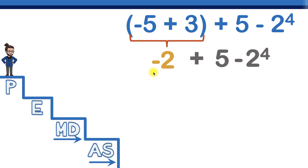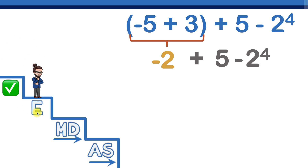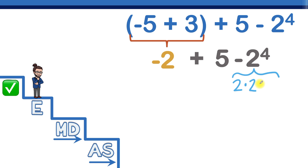Now we're at the expression negative two plus five minus two to the fourth. Do you see any more parentheses? Nope, so we hop down to step number two — exponents. Do you see any exponents? Yes, we have two to the fourth. Two to the fourth means two times two times two times two.